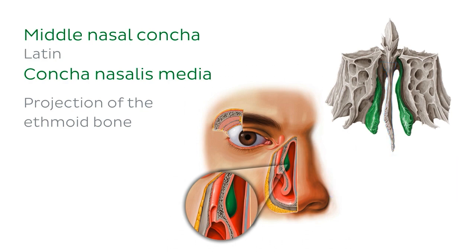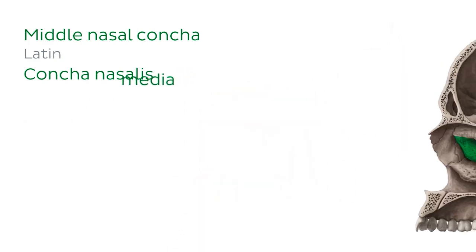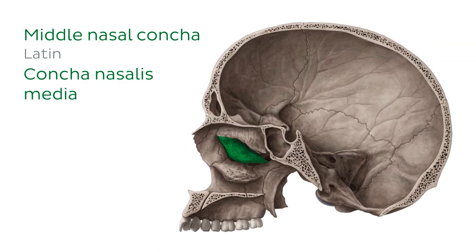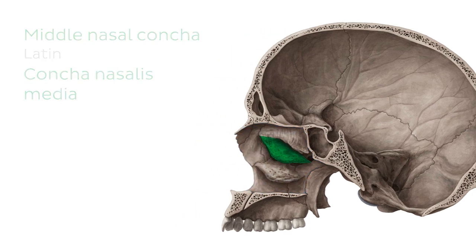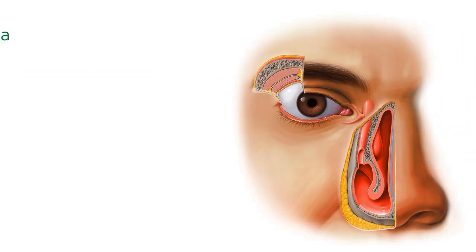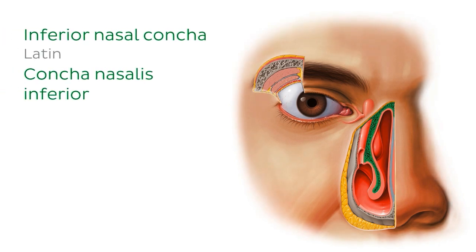The middle nasal conchae are on either side of the nasal cavity projecting inwards from the lateral walls. In this new image we're looking at a midsagittal section of the skull with the nasal septum removed. The nasal cavity is here, and within it we can see the middle nasal concha highlighted in green. Inferior to the middle nasal concha is the inferior nasal concha.